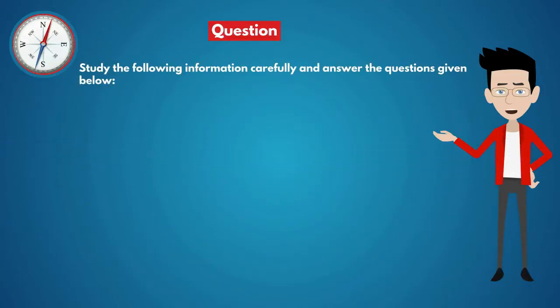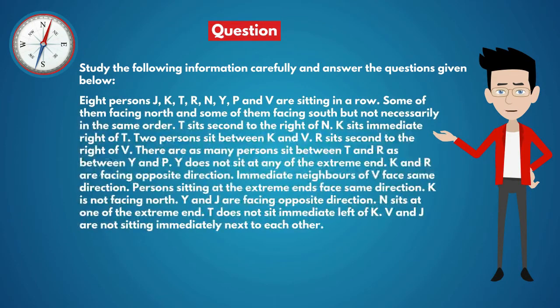Study the following information carefully and answer the questions given below. 8 persons J, K, T, R, N, Y, P and V are sitting in a row.